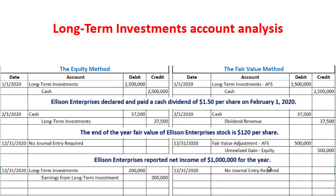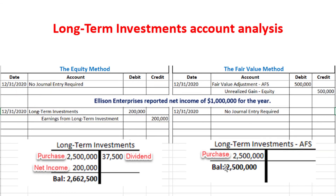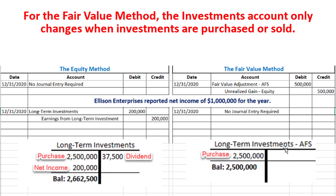Now let's discuss the balance of the long-term investments account and how it differs under the two methods. For the fair value method it's straightforward — the only time you change the long-term investments account is when you have a purchase, which was 2.5 million dollars, or a sale. Remember that on the balance sheet you would also list the fair value adjustment account next to the long-term investments account.